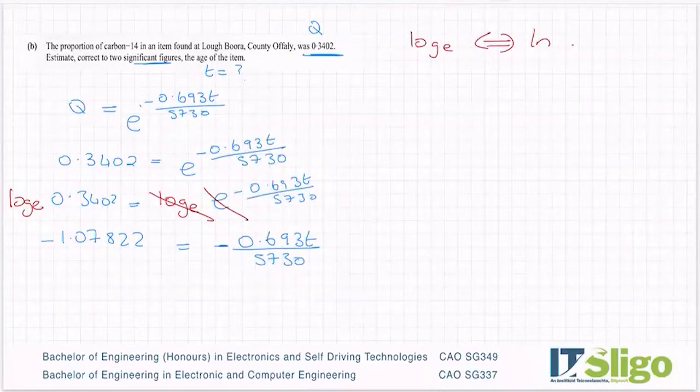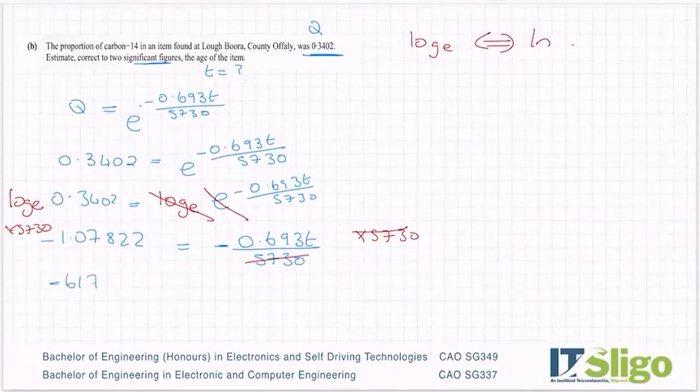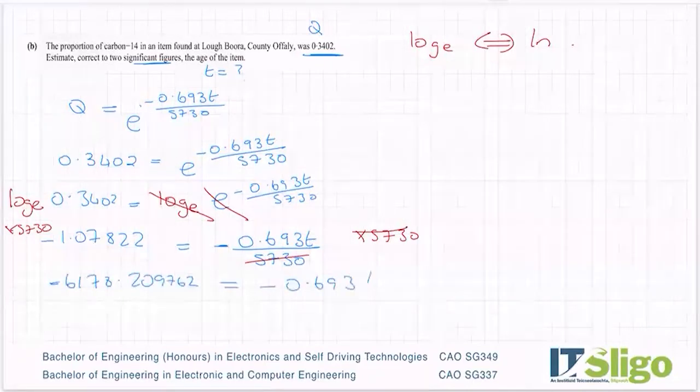I'm going to multiply both sides by 5730 so that it cancels off the right. I'm stripping away everything from around the t here so that I solve for t. So let me multiply that answer that I got by 5730 and I got minus 6178.209762 equals minus 0.693t.